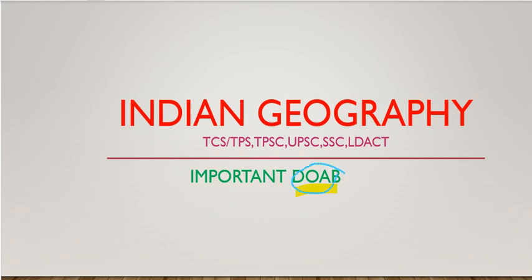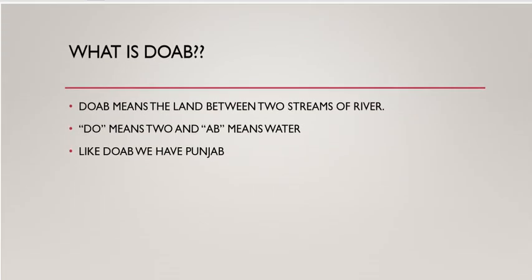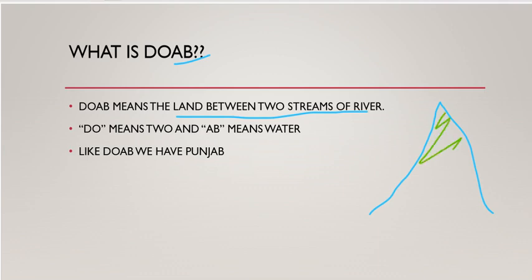Now the question is: what are doabs? What do you mean by doab? Let's first understand the term. Doab means the land between two streams of a river. Let's say here is one stream of a river and here is another stream of a river — the land between these two streams, this portion, is called a doab.